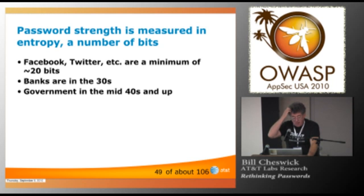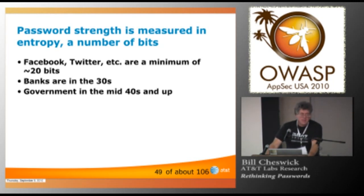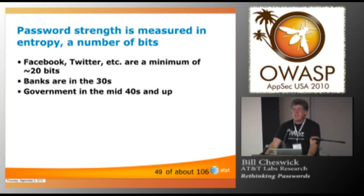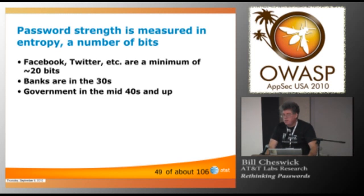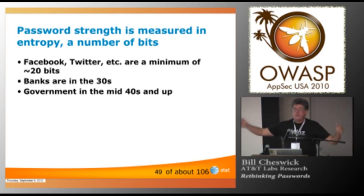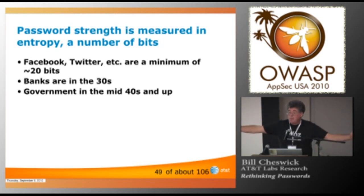And it is true that dictionary attacks are still a concern in some circumstances. But Grandma doesn't face this. It's a different situation. Password strength, of course, is measured in entropy, number of bits. Here is from the Cormac paper. Facebook and Twitter require about 20 bits of entropy. Banks are in the mid-30s. Government in mid-40s and up. That's a pretty strong password. So, one way you could do this is take a short list of words and pick words randomly out of the list. And that's your passphrase. You don't get to pick the words. The random number generator does. And the longer the list, the fewer number of words you have to do.